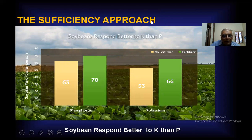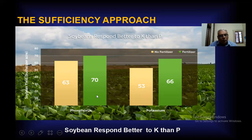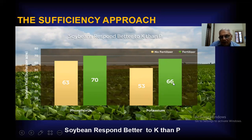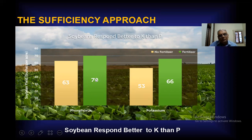In the sufficiency approach, for example comparing potassium and phosphorus for soybean: soybean responds better to potassium than phosphorus. You can see that with potassium, suppose 70 kg yield is achieved, whereas with phosphorus only 66 kg is obtained. So potassium response is less as compared to phosphorus response, and it depends upon the crop to be grown.